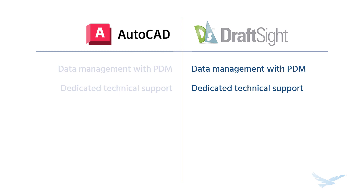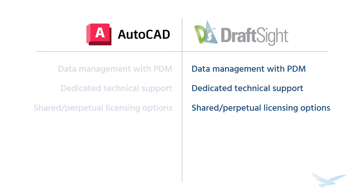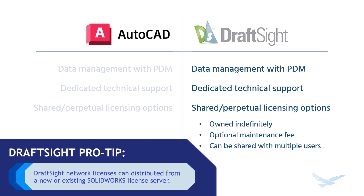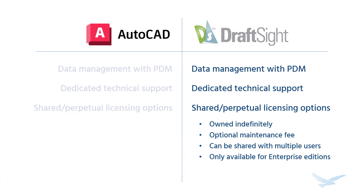Finally, and for many the most important difference, is the available licensing options and associated cost. Autodesk officially announced the end of both perpetual and network licensing in 2021, opting for a user-named approach and limiting licensing flexibility. On the other hand, DraftSight Enterprise Editions are offered with both perpetual and network options, meaning licenses are owned indefinitely without a required annual fee and can be shared by multiple users. It's important to note these license types are only offered by resellers such as Hawkridge Systems, and are not available through the DraftSight website. For users who don't require AutoCAD's extensive industry-specific add-ins — especially those who use AutoCAD part-time or occasionally — DraftSight Enterprise offers the potential to save thousands of dollars annually. The following section will illustrate this through two short case studies.